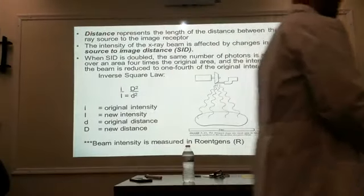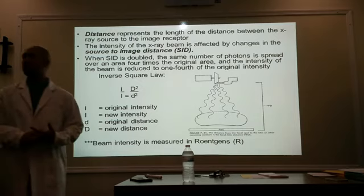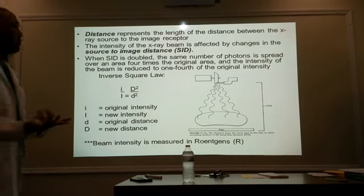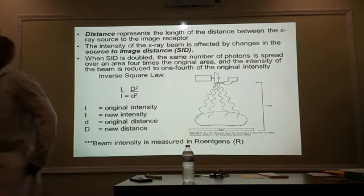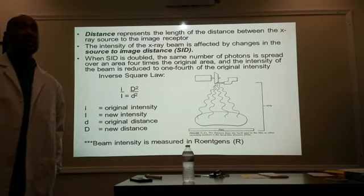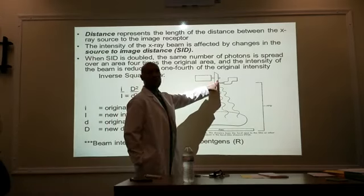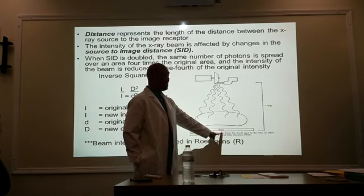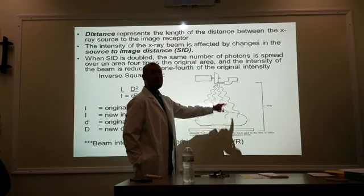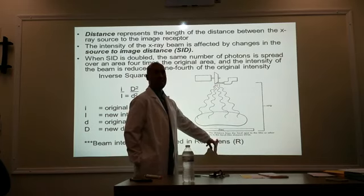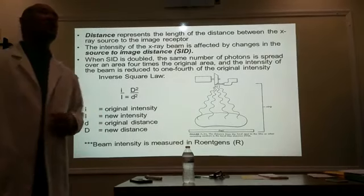Let's talk about distance. Distance represents the length between the x-ray source and the image receptor — just plainly your film, your cassette, your PSP. The intensity of the x-ray beam is affected by changes in your distance. We're specific here to source-to-image distance (SID). The source is your x-ray tube, and your image is your image receptor. Changes in your SID can also affect the overall intensity of your x-ray beam.